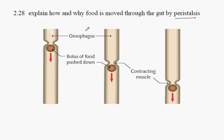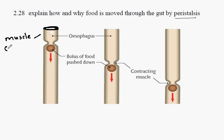In the diagrams here, we have the outline of the gut with the gut walls here. The important thing to remember about the gut walls is that they are composed of — or they have within them — muscle tissue, which of course can contract.